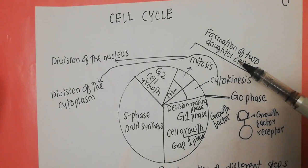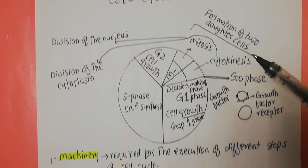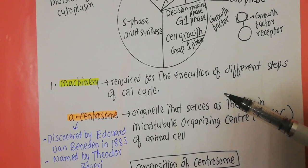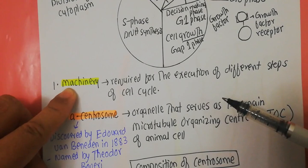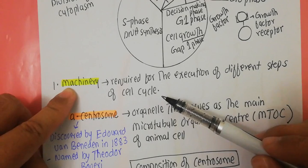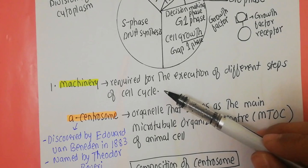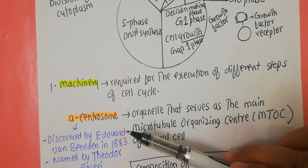Let us discuss things in a little more detail. When you talk about the cell cycle, you need a lot of things. The first thing you need is the machinery — the components which are required for the execution of the different steps of the cell cycle. We will be discussing this machinery in detail.